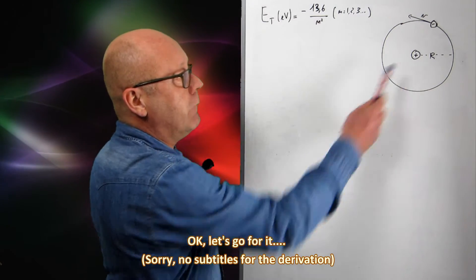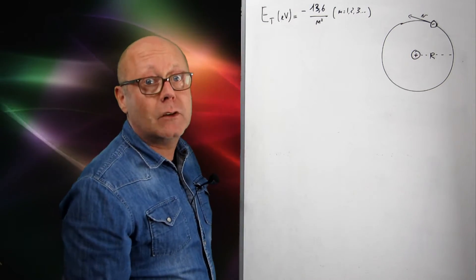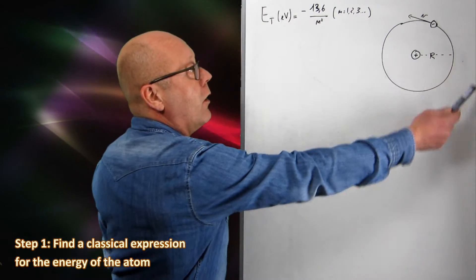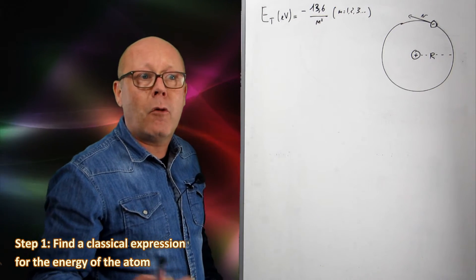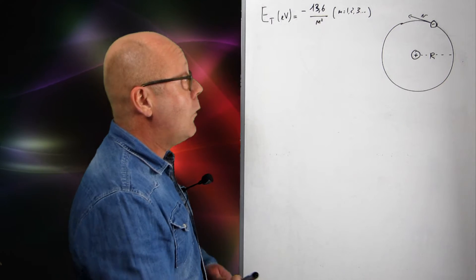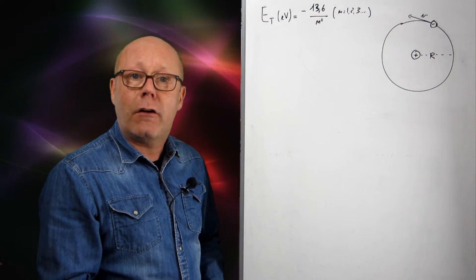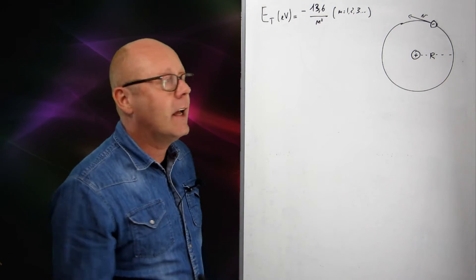What do we have? We have a nucleus here, a proton with a positive charge, and an electron going around the positive charge according to the model of Bohr. Well, let's calculate the energy of this electron, which is the energy of the atom.